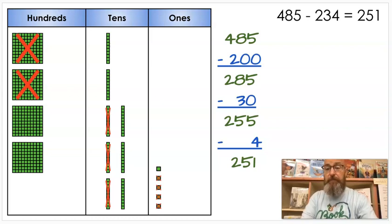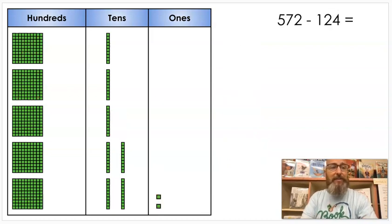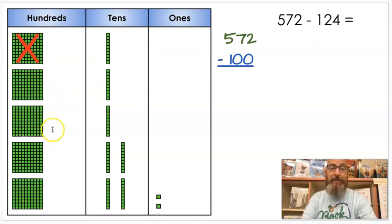Now, neither one of those required us to regroup. We are going to regroup for these next two. I want to show you two without regrouping and two with, and then we're going to be done. Alright, so let's look at our next question: 572 minus 124. And we start the same way. We build our 572, which we have here. 100, 200, 300, 400, 500, 10, 20, 30, 40, 50, 60, 70, 2. So that's 572. Still going to subtract that 100 first. So I cross out 100 and I subtract 100. So now instead of 572, I have 472.